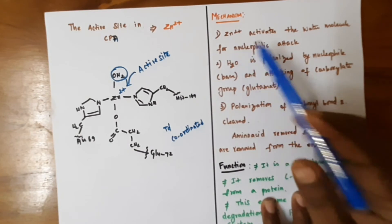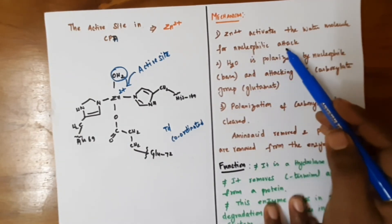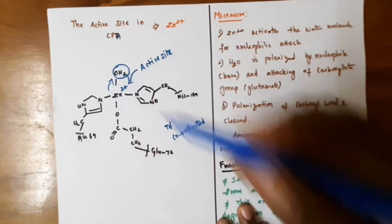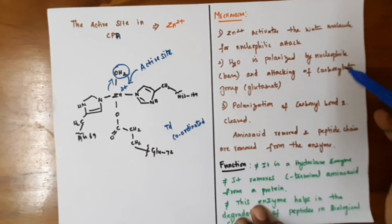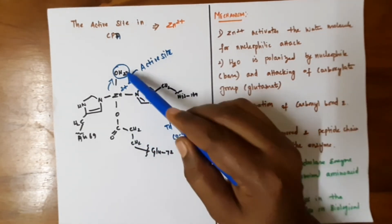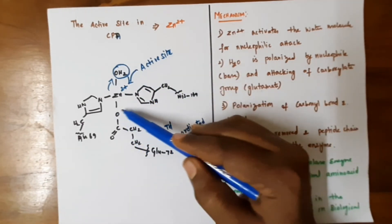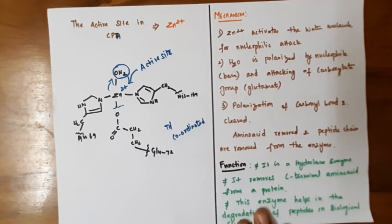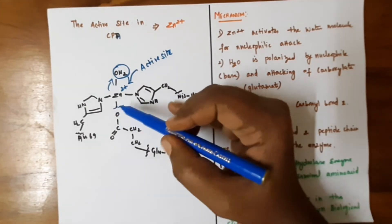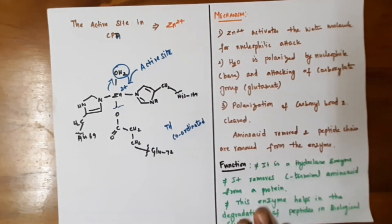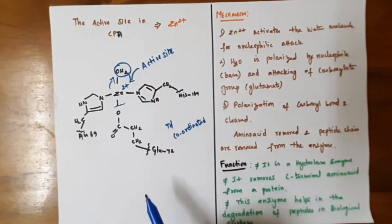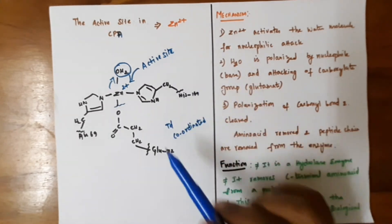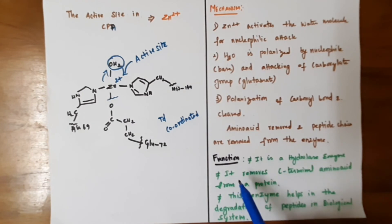The mechanism of carboxypeptidase involves three steps. First, zinc 2+ activates the water molecule for nucleophilic attack, causing the water molecule to split and polarize into H+ and OH−. Second, the polarized water molecule cleaves and polarizes the carbonyl bond of glutamate. Third, the carbonyl bond is polarized, H+ and OH− are removed from the enzyme, the amino acid is separated from the enzyme, and the peptide chain is released. This is the overall mechanism of carboxypeptidase.